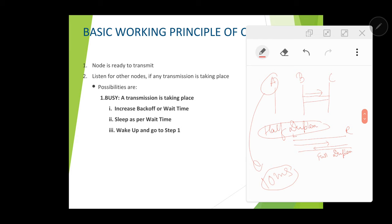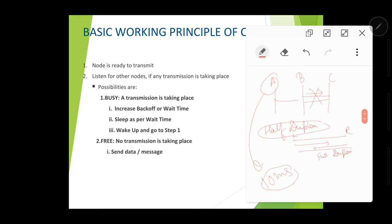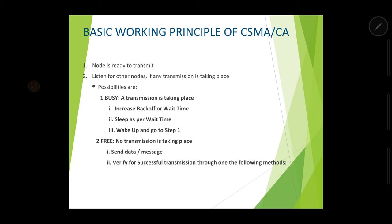Now let us say no transmission is taking place between B and C — the previous transmission is over. The communication channel is free, meaning there is no transmission taking place. So A will send the data to B. After sending the data to B, A will verify if successful transmission has taken place or not, through one of the following methods.